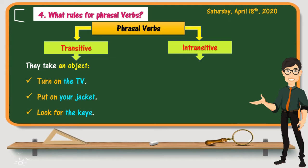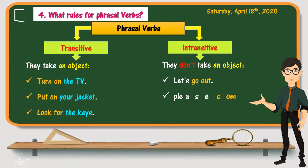Phrasal verbs can also be intransitive, meaning they don't take an object. Examples are: let's go out, please come in, I will sit down. Notice that the verbs go out, come in, and sit down are used with no objects.